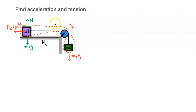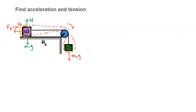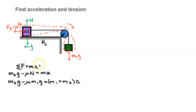Next, we indicate the positive direction. I'm going to make the positive direction clockwise: to the right on the table and downward on the right-hand side. For m2, there's a gravitational force m2g drawn downward. There's friction: f_k equals mu times the normal force. For m1, there is a normal force balancing m1g, so these two forces are balanced.